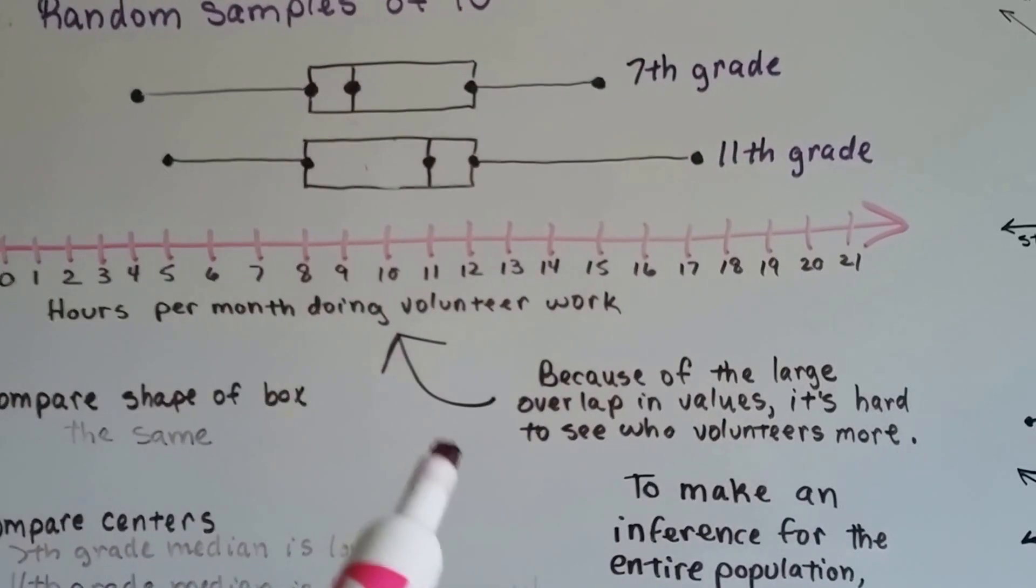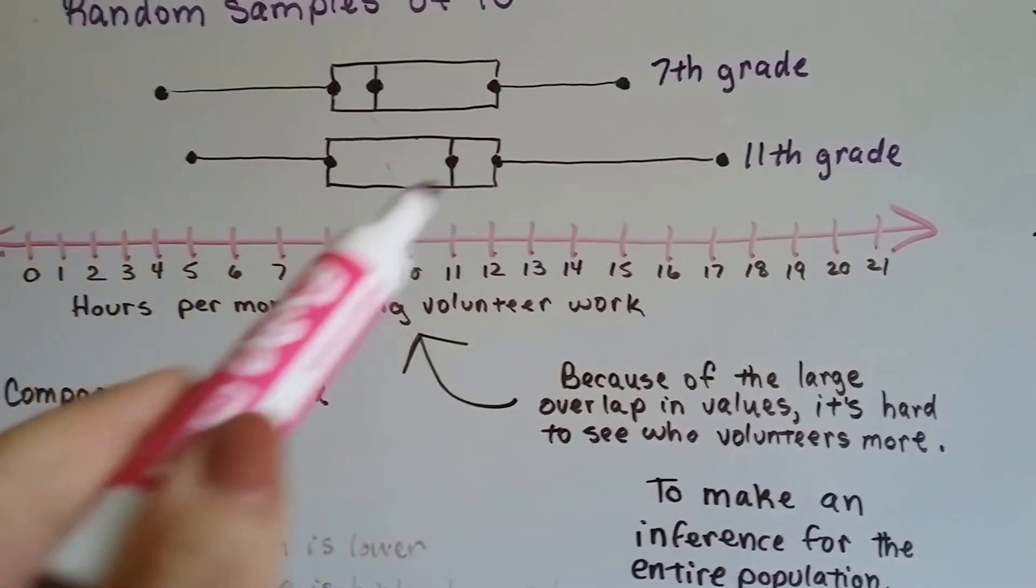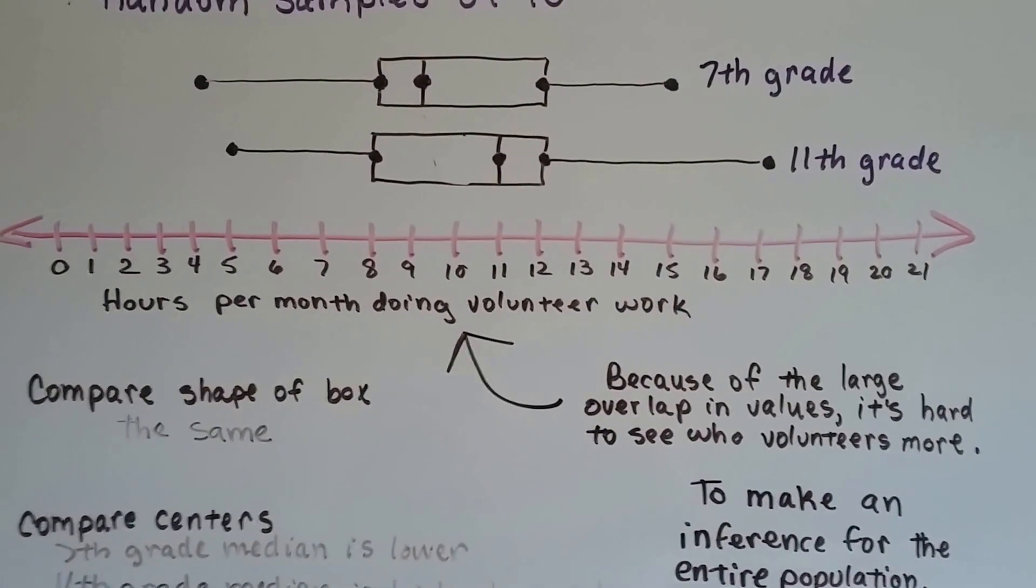Because of the large overlap in values right here, that the boxes are like right on top of each other, it's hard to see who volunteers more exactly.